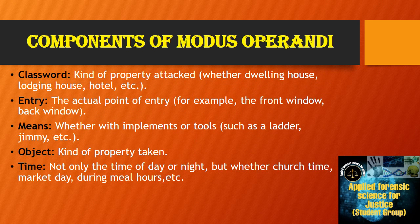Now, components of Modus Operandi — we will study 10 components. First is class of work: the kind of property attacked, whether it is a dwelling house, lodging house, hotel, etc. Entry: the actual point of entry, for example, the front window, back window, etc. Means: whether with implements or tools such as a sledge, chimney, etc. Object: kind of property taken. Time: not only the time of day or night, but whether during church time, market day, mail hours, etc.